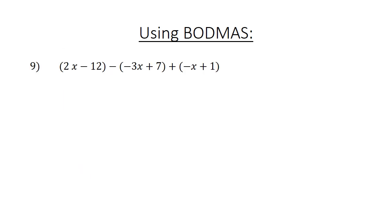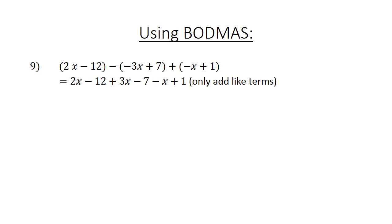Using bad math: negative 28 divided by negative 7 equals positive 4. 2 in brackets (negative 3x plus 7), plus brackets (negative x plus 1). Equals 2x minus 12 plus 3x minus 7 minus x plus 1. You can only add like terms: 4x minus 18. Negative 28 divided by negative 7 equals positive 4. 245 divided by negative 5 equals negative 40.